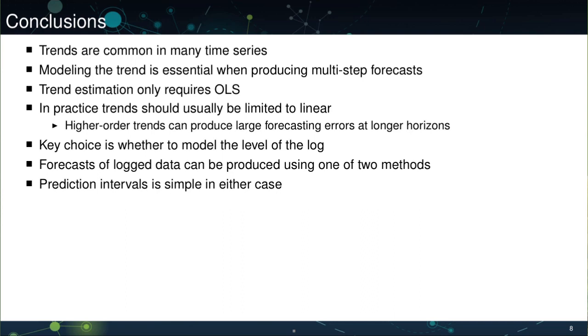The median is also simpler because it doesn't really require us to make such a heroic assumption about the errors being normally distributed. In fact, if the errors are symmetrically distributed, such that the median of epsilon is equal to zero, then taking the exponential and using the median forecast will also be correct. Finally, prediction intervals are easy to construct in either case.